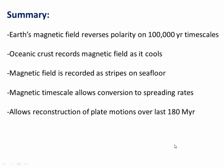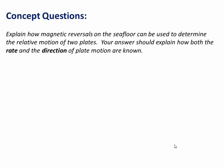In summary: Earth's magnetic field reverses polarity on roughly 100,000 to million year timescales and has done so many times. Ocean crust records the magnetic field of Earth as new basaltic rock cools, creating magnetic stripes on the seafloor parallel to the spreading ridge. If we measure those stripes and match them to a magnetic timescale, we can convert them into spreading rates. Knowing those spreading rates and directions lets us reconstruct plate motions with a high degree of accuracy over the last 180 million years. Thanks so much for listening. I'll leave you with a concept question, and see you in class.